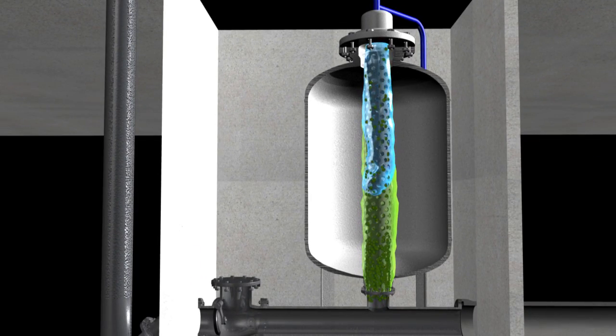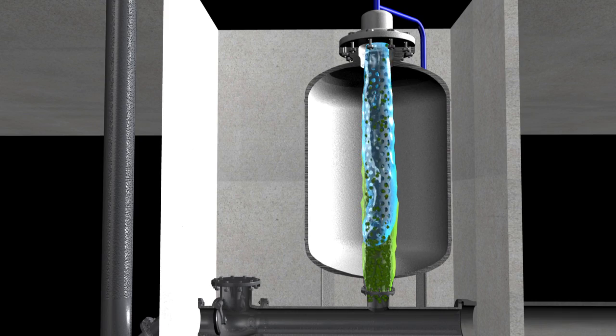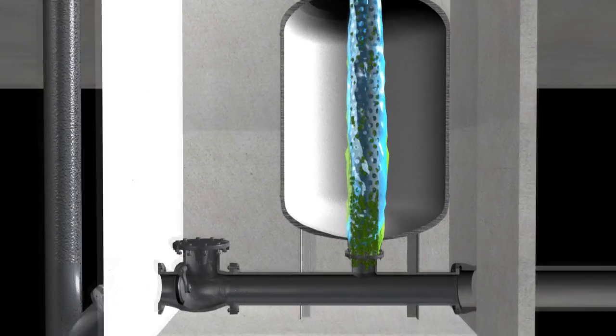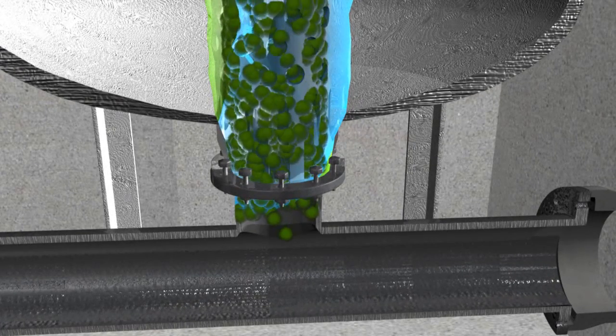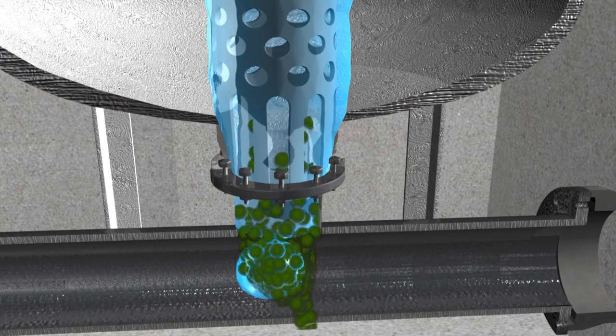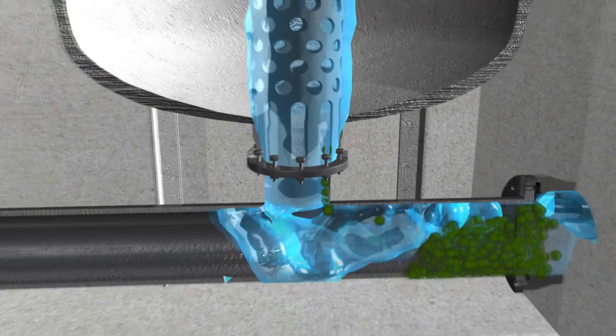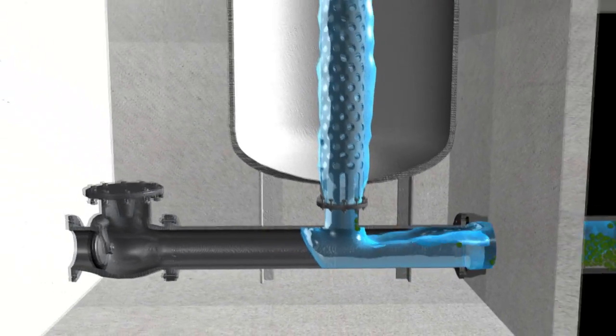When water pressure is applied at the top of the tank, the stream dislodges any solids left in the perforations on the column, including any accumulated solids near the bottom, ensuring optimum performance when the system is back online.